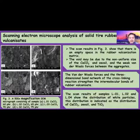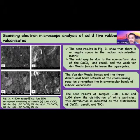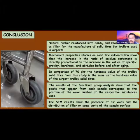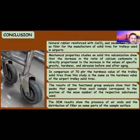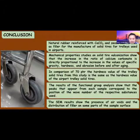In conclusion, natural rubber reinforced with calcium carbonate and silicon dioxide can be used as filler for the manufacture of solid tires for airport trolleys. The increase in the ratio of calcium carbonate is directly proportional to the increase in specific gravity, hardness, and abrasion resistance before and after aging, with a comparison at 70 Shore A for hardness. The hardness values from this study match those of actual airport trolley solid tires. The FTIR functional group analysis confirms the peaks correspond to the expected wavenumbers of the materials used, and SEM analysis shows the presence of air voids and the distribution of filler on the sample surface.